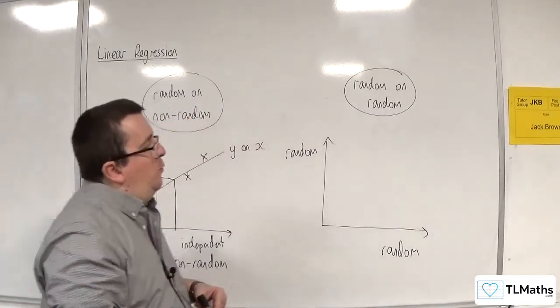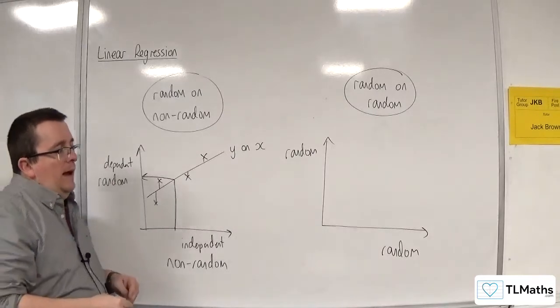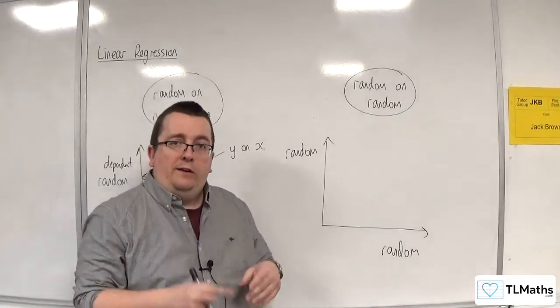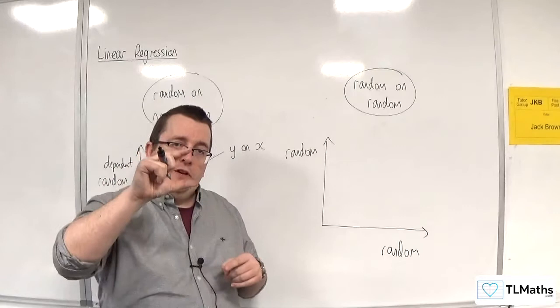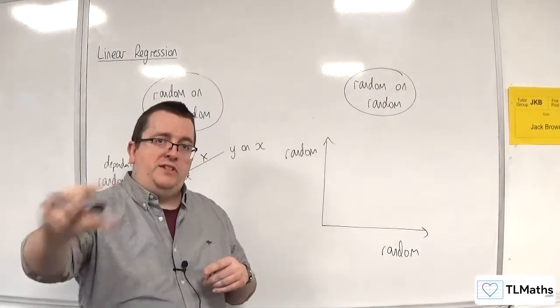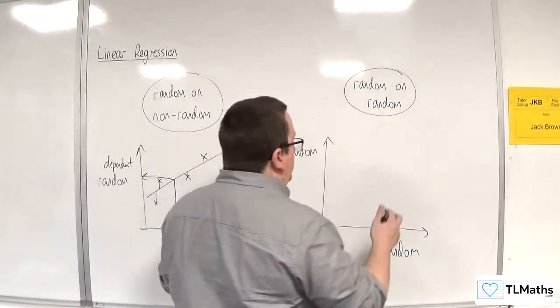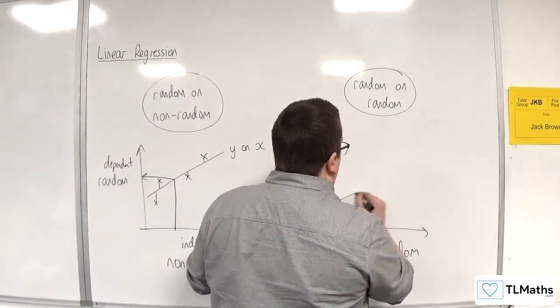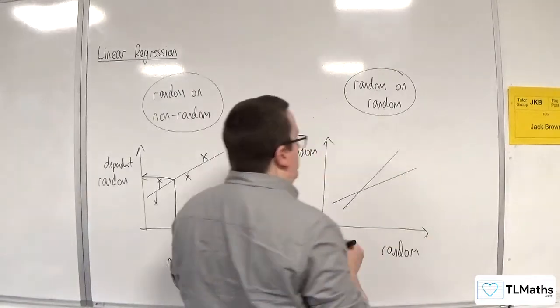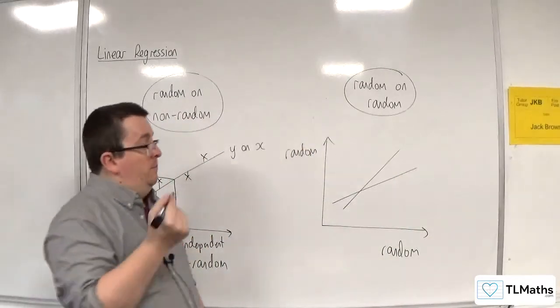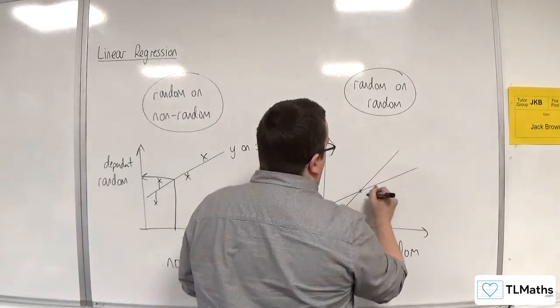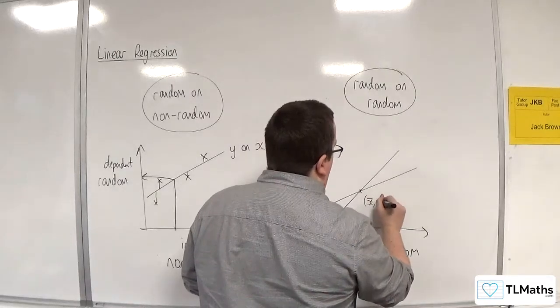And consequently, when you're working with random on random, you can then look at minimizing the vertical distances, the squares of the vertical distances, or the squares of the horizontal distances. And so you get two possible regression lines, both of which must go through x bar, y bar, of course.